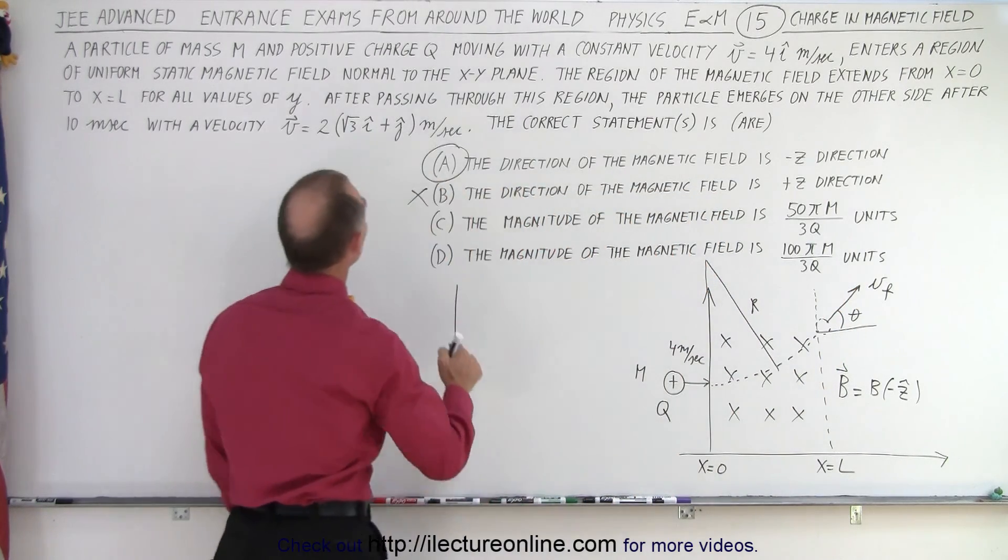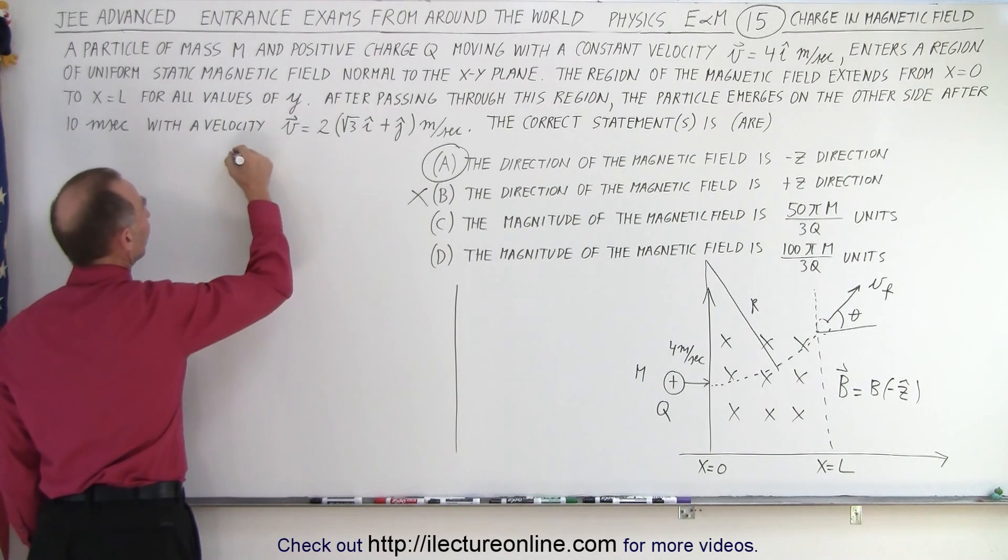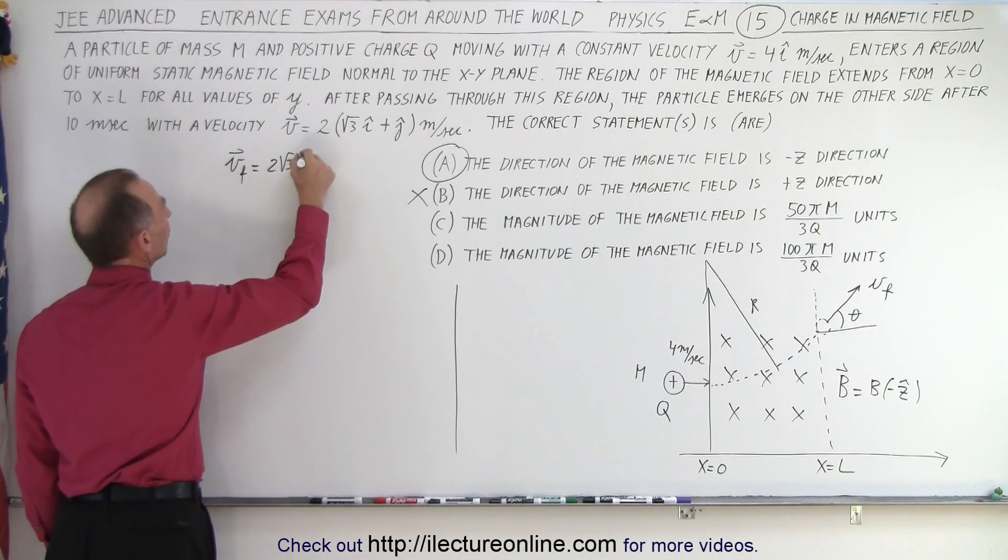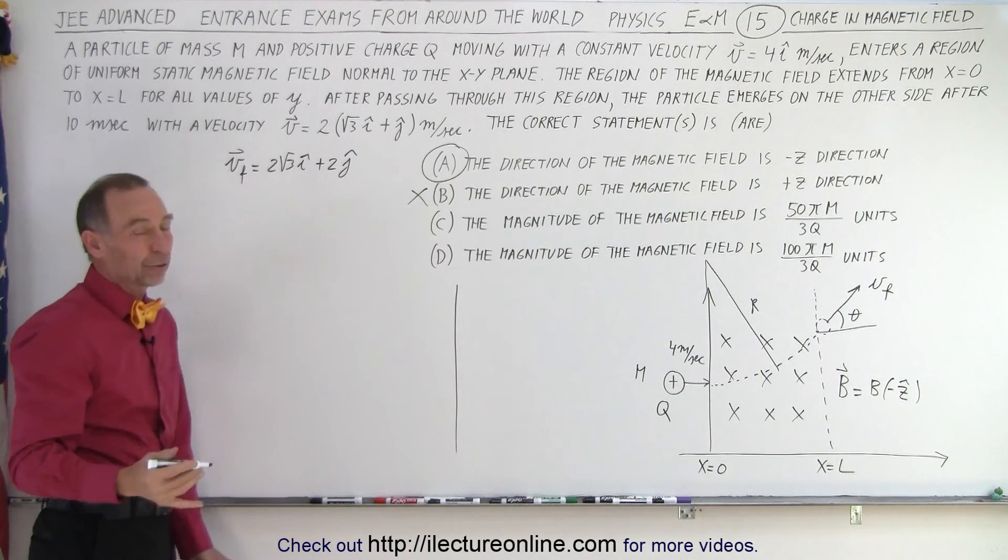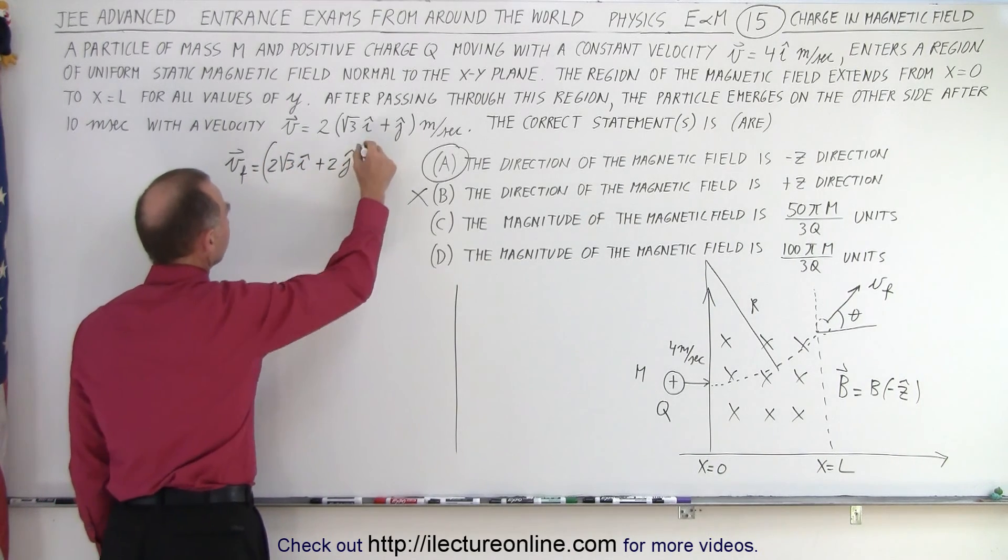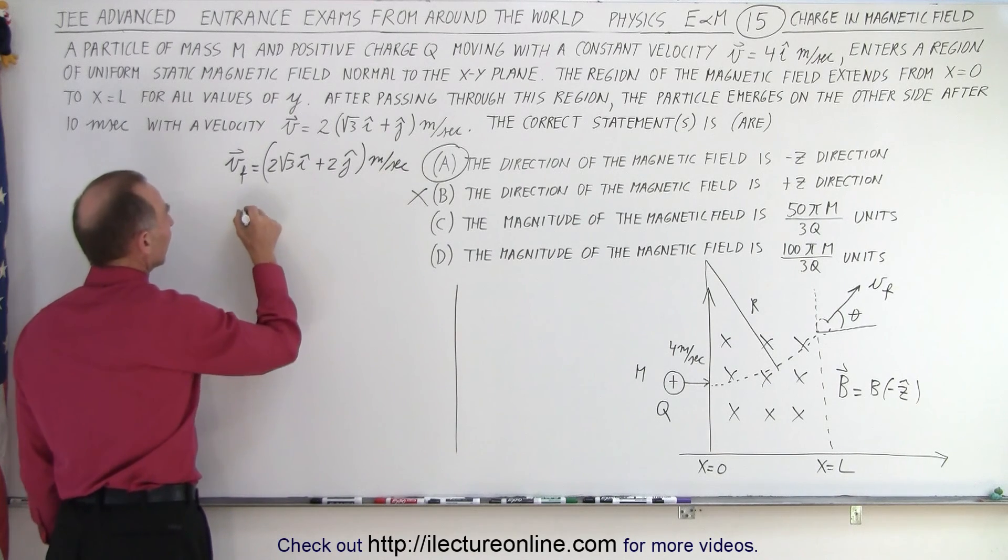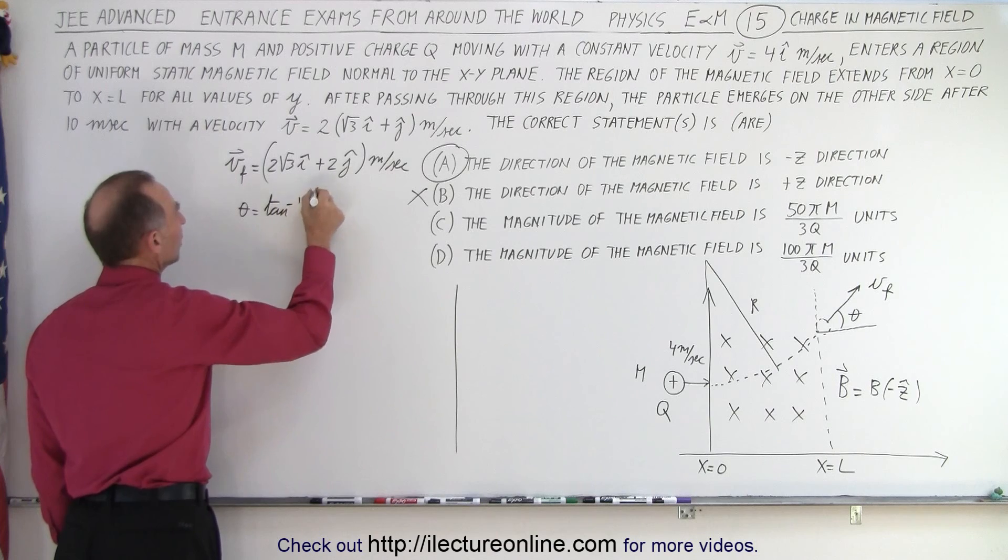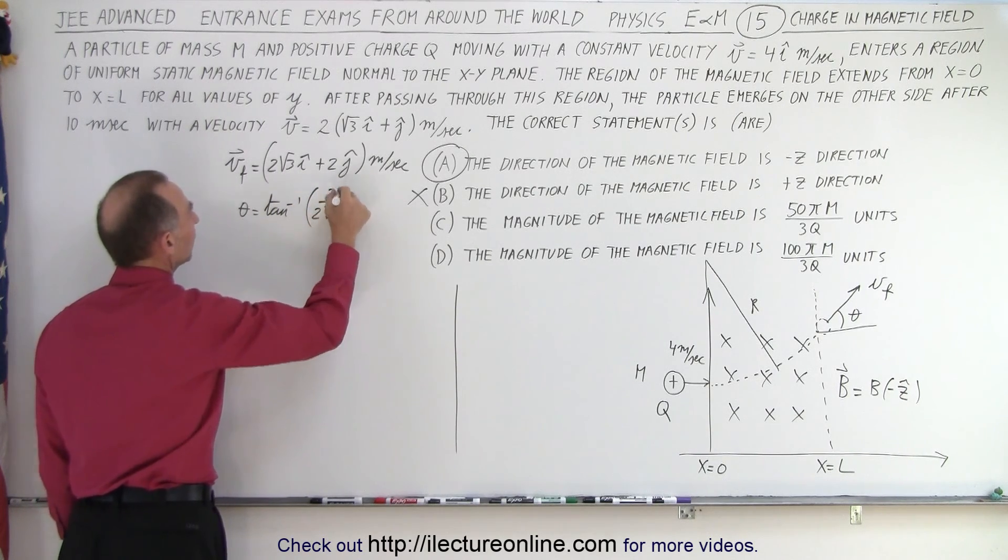So the angle can be determined by the direction of motion right here at the end. We say v final is equal to 2 times the square root of 3 in the i direction plus 2 times j in the j direction, of course in meters per second. That means that we can say that theta is equal to the inverse tangent of the opposite over the adjacent. The opposite would be 2, the adjacent would be 2 times the square root of 3.